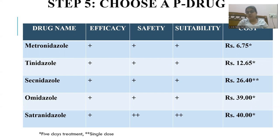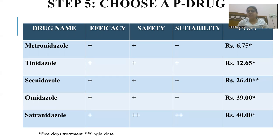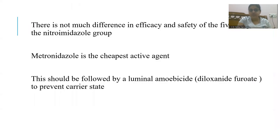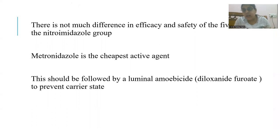The P-drug will be metronidazole because its price is about seven rupees. Other drugs are more costly and are not the first P-drug choice. If metronidazole must be avoided, the second drug secnidazole can be used. Along with metronidazole, we can give a luminal amoebicide — diloxanide furoate — to prevent the carrier stage by killing the amoebic cysts.